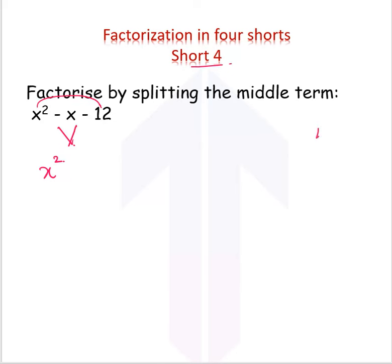If I factorize 12, I get 4 and 3 as the two important numbers. So if I split minus x to be minus 4x plus 3x minus 12,